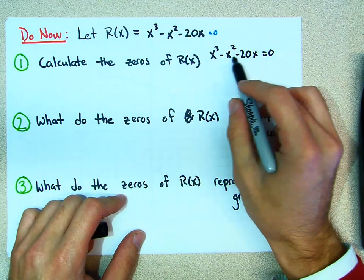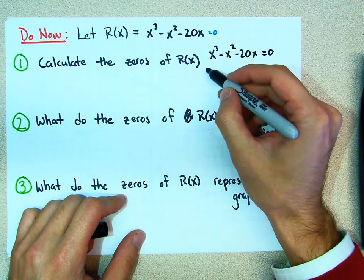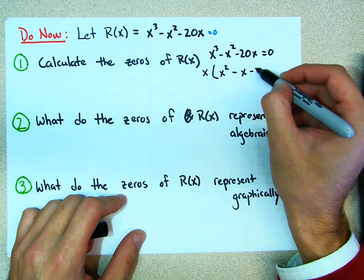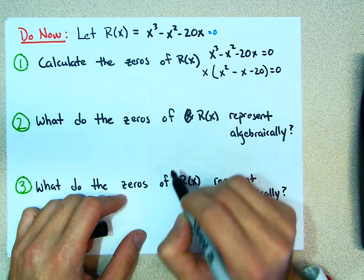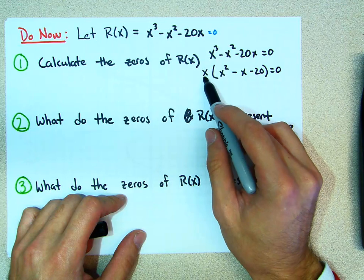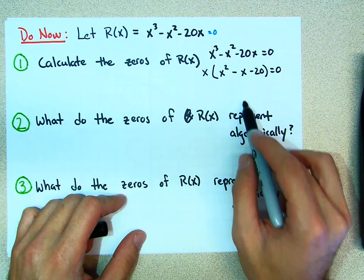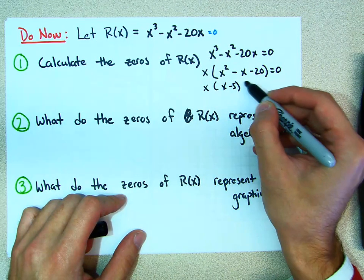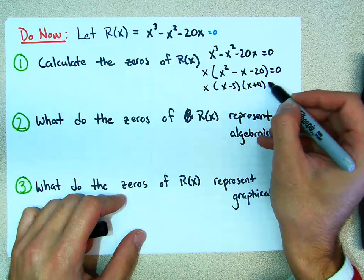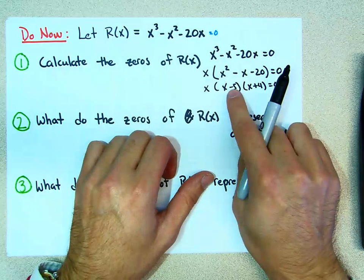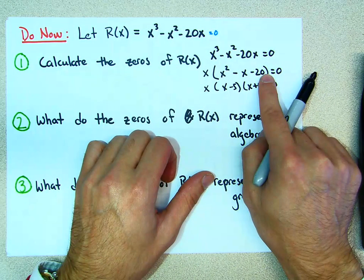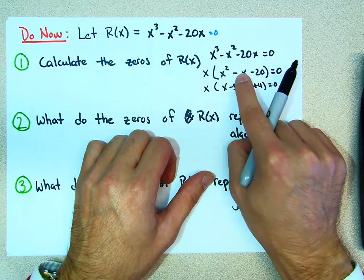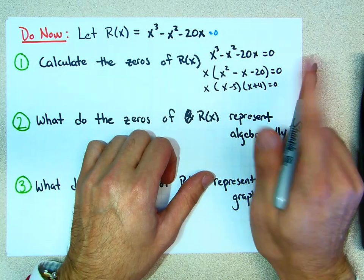What's the GCF? The GCF is x. So you factor out an x, and then it becomes x times (x squared minus x minus 20) equals zero. Can we factor that quadratic more? Yes — it's x times (x minus 5) times (x plus 4) equals zero, because negative 5 times 4 is negative 20, and negative 5 plus 4 is negative 1. So this is the right combination.